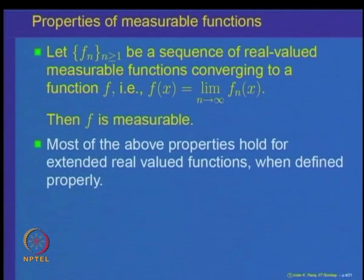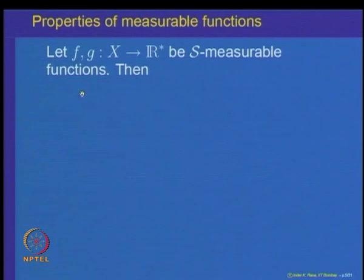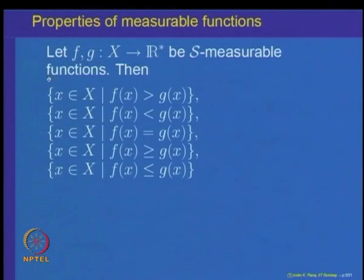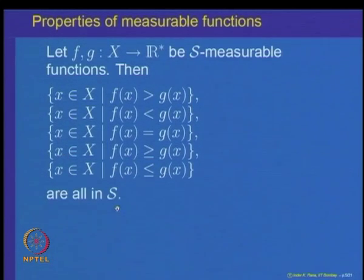One defines F + G(x) to equal F(x) + G(x) when x does not belong to A, and to equal any fixed number α when x belongs to A. With this definition, F + G is S-measurable. This means the results about sums and products of measurable functions hold for extended real valued functions as well, when those functions are appropriately defined.